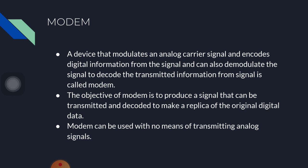Modem: a device that modulates an analog carrier signal and encodes digital information into the signal, and can also demodulate the signal to decode the transmitted information, is called a modem. The objective of a modem is to produce a signal that can be transmitted and decoded to make a replica of the original data. A modem can be used with any means of transmitting analog signals.